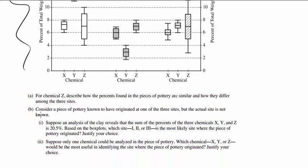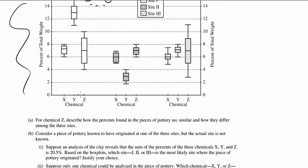What are the questions though? For chemical Z, describe how the percent found in the pieces of pottery are similar and how they differ among the three sites. So that's chemical Z, that's chemical Z, and that's chemical Z.